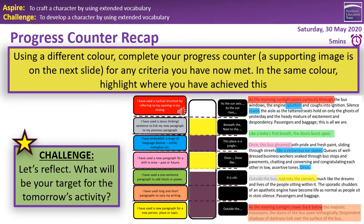Year 7, on the activity you've just completed, I'd like you to use a different colour and add to your progress counter. Some of the criteria you might have met again, which is absolutely fantastic. However, some of the blanks you had previously — you might now have met that criteria. If you have, colour it in a different colour and write down the example of where you've used that. Then if you go on to the next slide, it's got another example for you to use. If you've still got some blanks, remember those for tomorrow's activity to see if you can incorporate them. You've got about three minutes. Well done, Year 7.